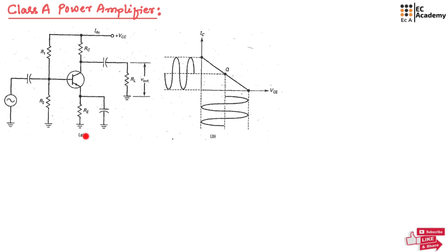Figure A shows the voltage divider bias amplifier which will act as a class A power amplifier. For a class A power amplifier, the collector current flows throughout the cycle, which means we will not have any clipping in the output current. We will get output current for the entire 360 degrees. Since the Q point is at the center of the load line, we will get the entire waveform at the output without any clipping.